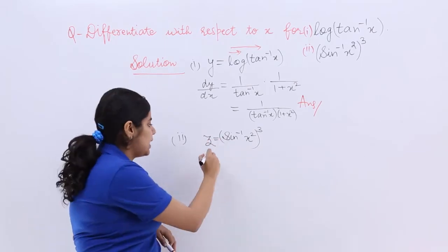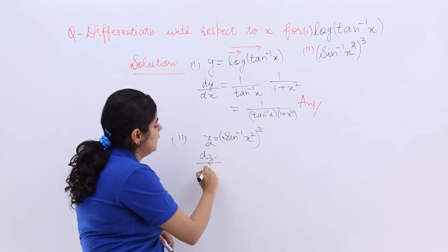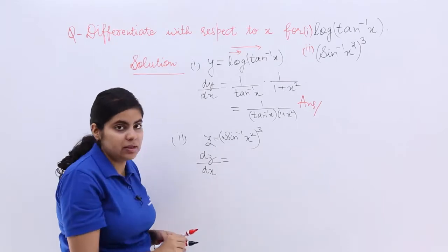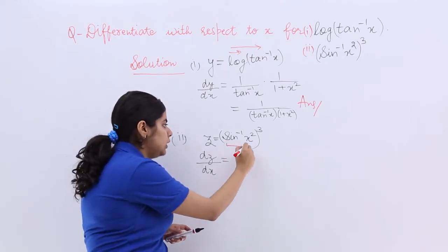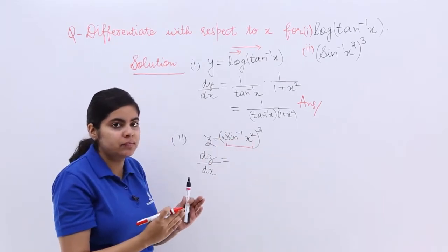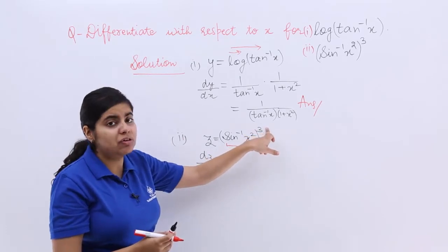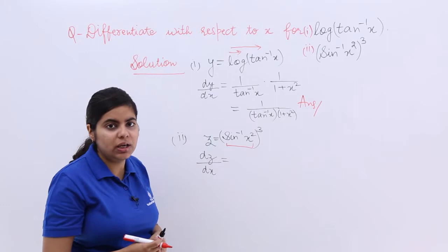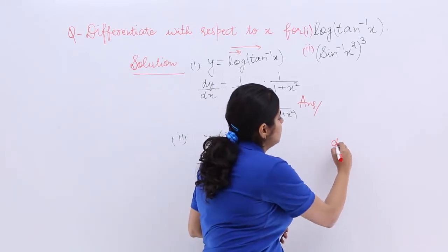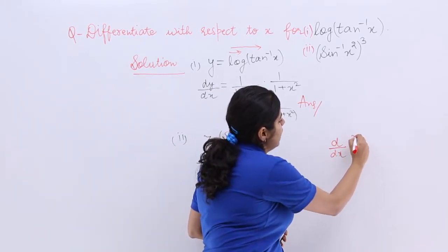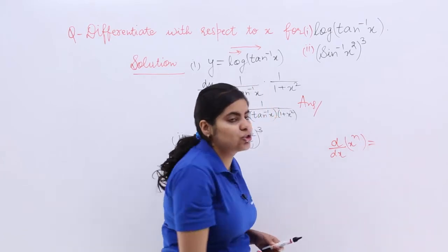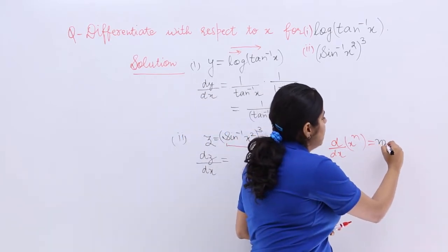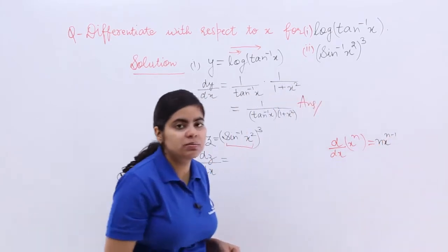Now differentiating with respect to x. So it is dz by dx and see if this whole thing behaves as x and this behaves as the power n. So isn't it the x raised to the power n formula? You know that what is the differentiation of x raised to the power n with respect to x? It is nothing but nx raised to the power n minus 1.